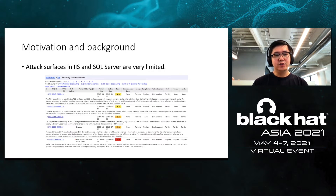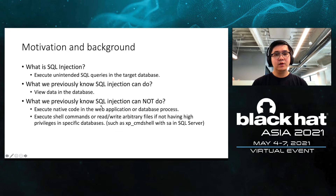Attack surfaces in IIS and the SQL Server are very limited, especially for memory corruption vulnerabilities. As you can see in this figure, the last memory corruption vulnerability in IIS appeared in 2009 — over 10 years ago. Attacking IIS and the SQL Server directly is much too difficult. So what if we have a SQL injection in advance? SQL injection can be used to execute any intended SQL queries in the target database.